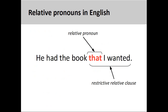Relative clauses are used to give additional information about something without starting another sentence. In the sentence you see on the screen, the main clause, "he had the book," is augmented with a relative clause, "that I wanted." Main clauses can always stand on their own, but relative clauses cannot. As you see on the screen, the relative pronoun "that" introduces the relative clause.